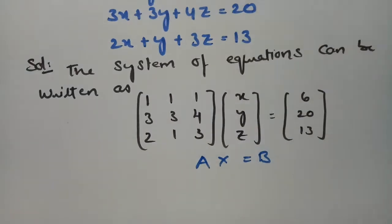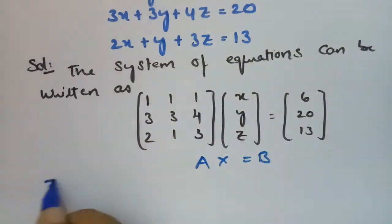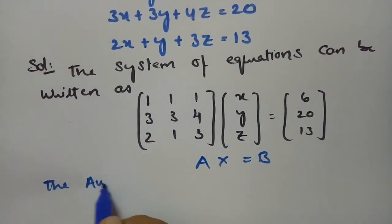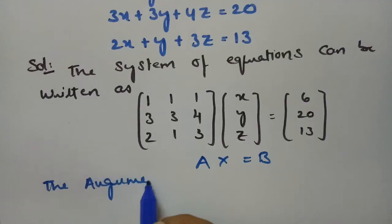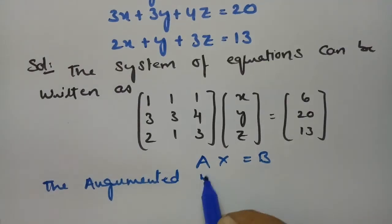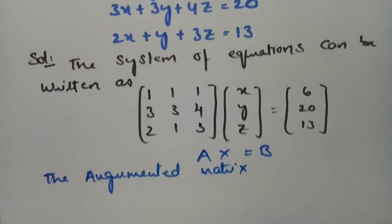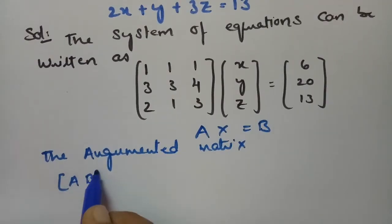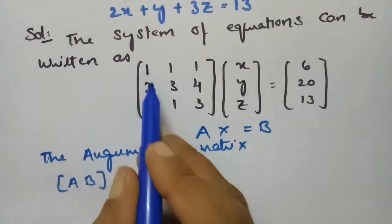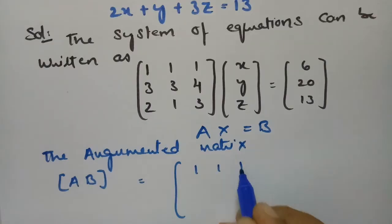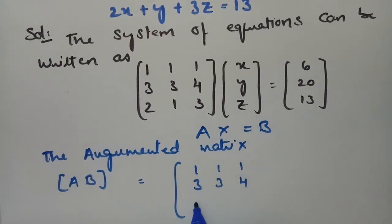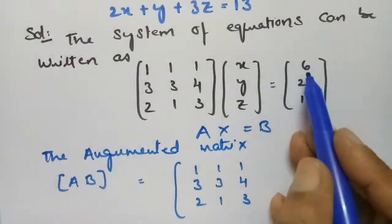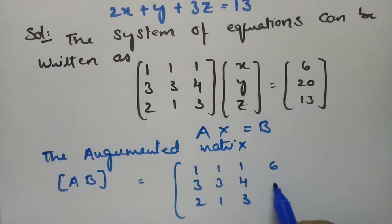So we have to prepare an augmented matrix. The augmented matrix for the equation Ax = b has the A matrix as: first row 1, 1, 1; second row 3, 3, 4; third row 2, 1, 3. And the b column is 6, 20, and 13.